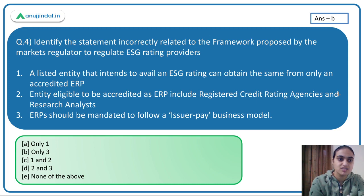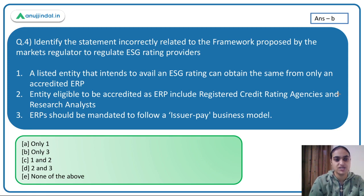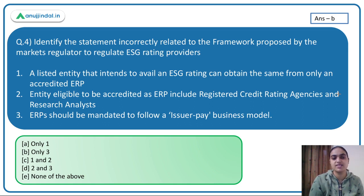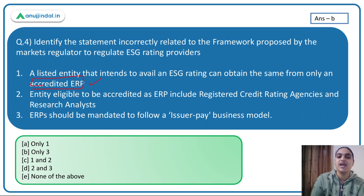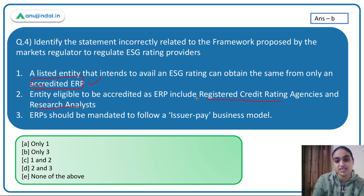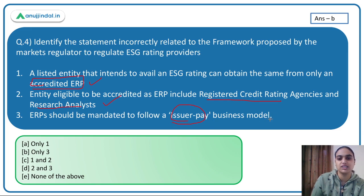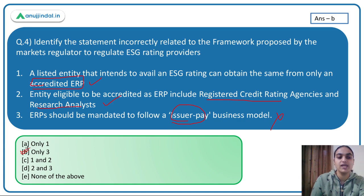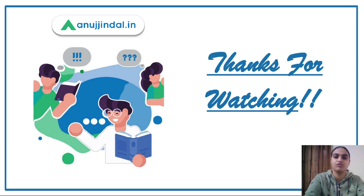The last question asks: identify the incorrectly stated fact about SEBI's proposed framework for ESG rating providers. Option A — listed entities can only get ESG ratings from accredited ERPs — is correct. Option B — ERPs are mandated to follow the issuer pay model — is INCORRECT, as the subscriber pay model has been proposed. So the incorrect statement is Option B. That concludes today's session.